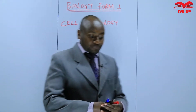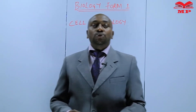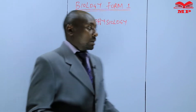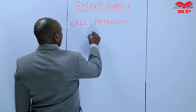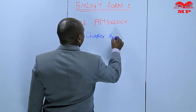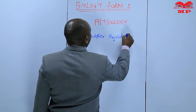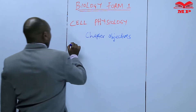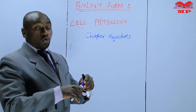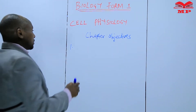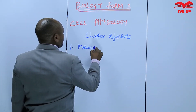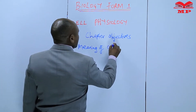First of all, I would want us to go through the objectives of this topic. So we look at Chapter Objectives. The first one: we need to understand what is Cell Physiology — so we need to understand the meaning of Cell Physiology.